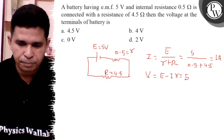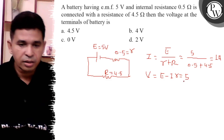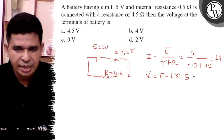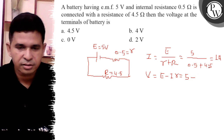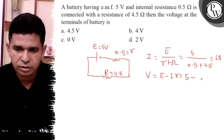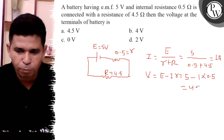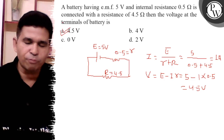E is given as 5 minus I, which is 1 ampere, multiplied by small r which is 0.5. So the final answer is 4.5 volt. It is option A — 4.5 volt. Thank you, all the best.